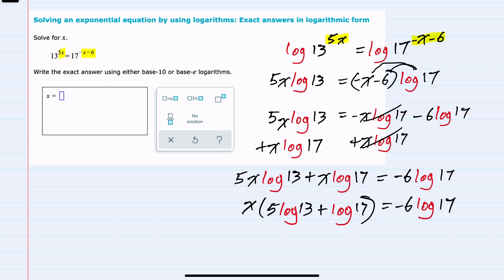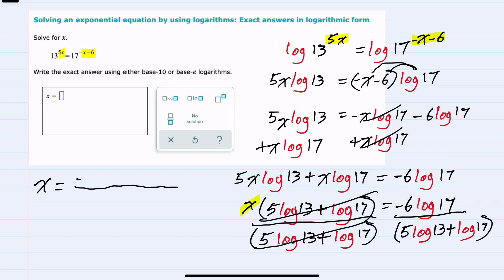From here to isolate the x, we divide both sides by 5 log 13 plus log 17, and here everything cancels on the left except for the x. So our x is equal to negative 6 log 17 over 5 log 13 plus log 17.